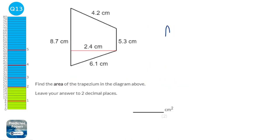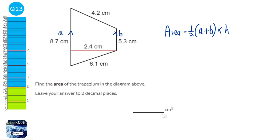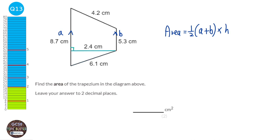The area of a trapezium is found using the formula: area equals half times (a plus b) times h. Now a plus b are the parallel sides in the trapezium. It doesn't matter which way around we label them. Then h always hits a and b at 90 degrees. Looking at the lengths, the slanted sides hit a and b at acute and obtuse angles, so they are not the height. The height is the length that hits both a and b at 90 degrees.